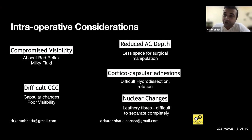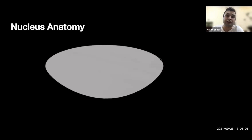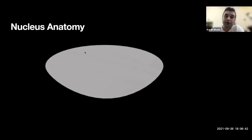You can have corticocapsular adhesion, so hydrodissection is sometimes difficult and rotation can be difficult. You can have nuclear changes like leathery fibers which are very difficult to separate completely. Looking at the anatomy of the nucleus, the central part is the densest part. Whenever you are chopping and holding, this is the area you need to chop. When sculpting, you need to follow the curve — superficial at first, then going deeper to form a C-shape.